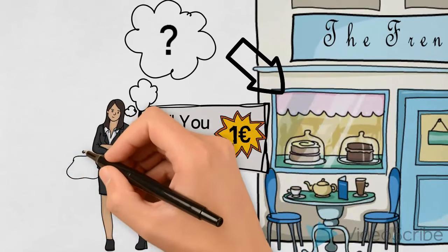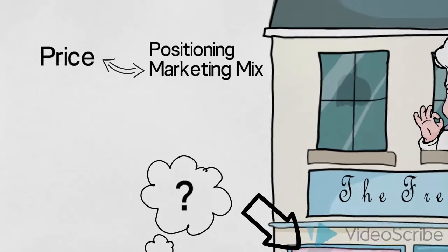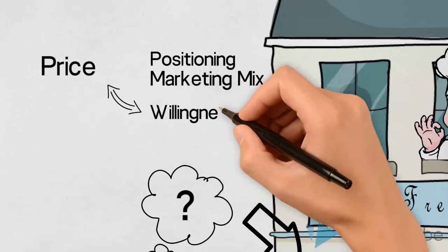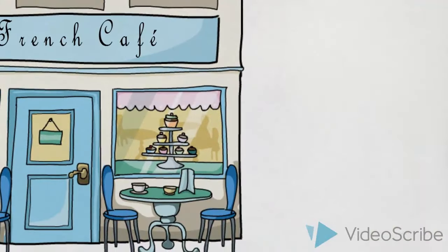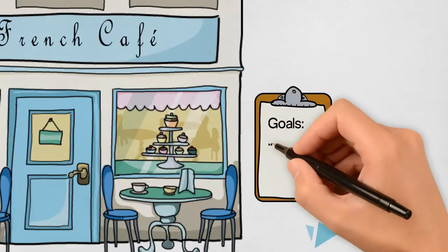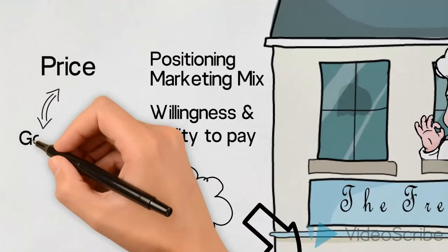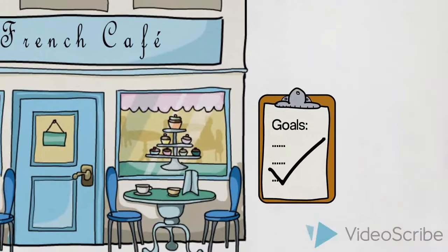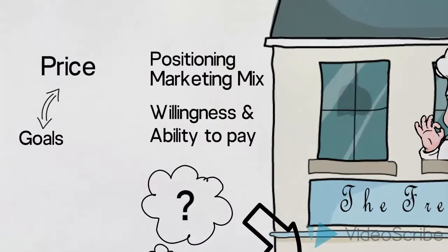Secondly, we need to consider some financial circumstances about our chosen target group and how they are likely to value our goods and services. We need to charge a price which our chosen target group is both willing and able to pay. Thirdly, when looking at our overall strategies and objectives with this product or service — in this case our cafe — we also need to make sure that the price we choose supports our goals. And finally, we need to ensure that we generate adequate income to cover our costs and preferably make a healthy profit, either in the short term or in the long term, depending on our strategy.